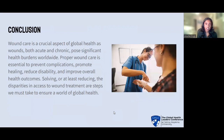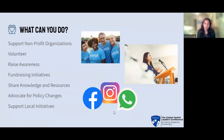In conclusion, wound care is a crucial aspect of global health as wounds, both acute and chronic, pose significant health burdens worldwide. Proper wound care is essential to prevent complications, promote healing, reduce disability, and improve overall health outcomes. Solving or at least reducing disparities in access to wound treatment are steps we must take to ensure global health. As for what you can do: support nonprofit organizations through volunteering or raising awareness, participate in fundraising initiatives, share knowledge and resources, raise awareness through social media, and advocate for policy changes in local government and support local initiatives.